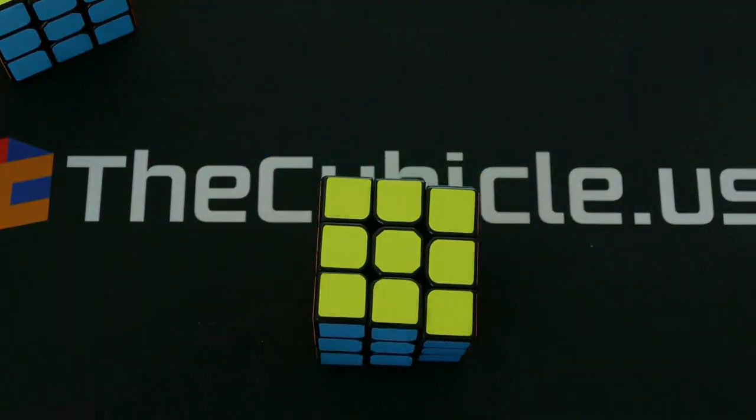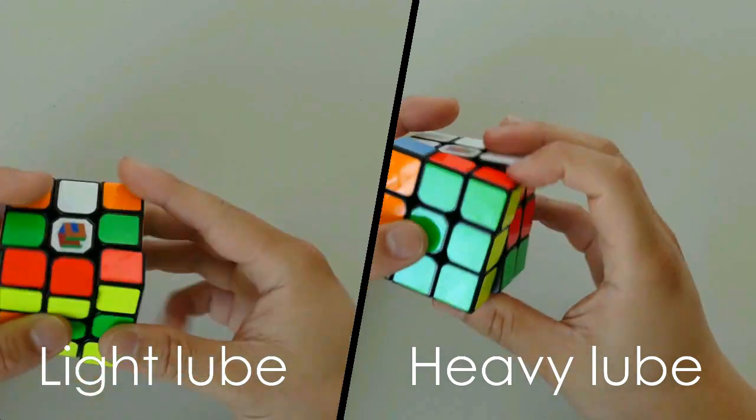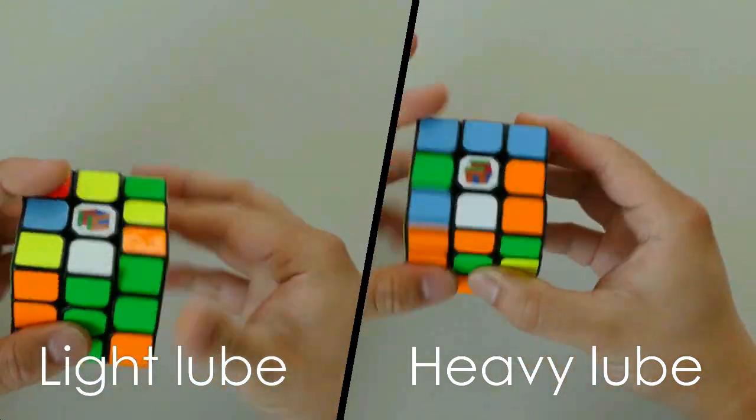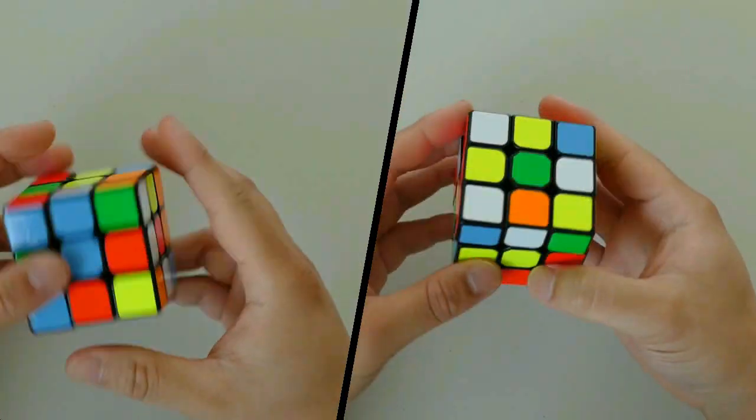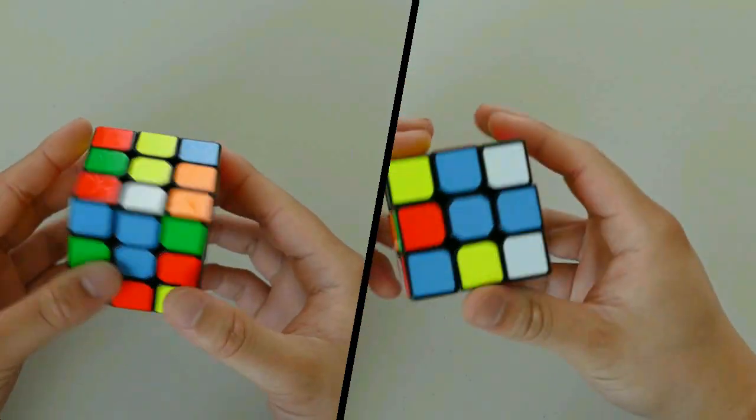With a cube of this speed overturning may be an issue if you're not used to its low resistance. We also felt that the cube lacks a wide tension range. At loose tensions the cube is unstable and pops. This in a way forces you to tension the cube on the tighter side.